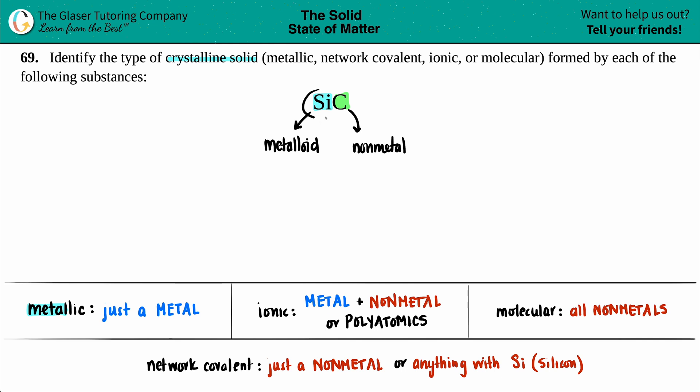It would be a network covalent crystalline solid, and it wouldn't be the molecular one because of the metalloid characteristic. So it would be network covalent.